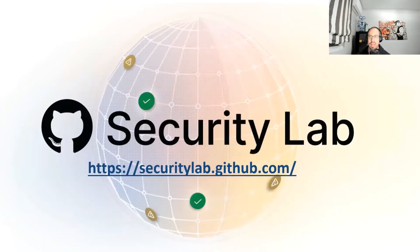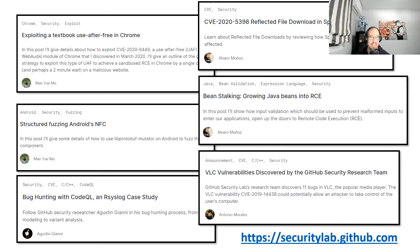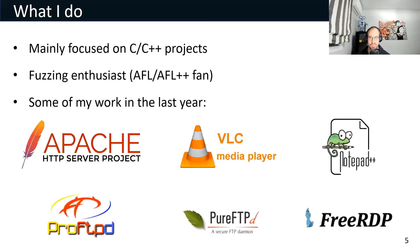Inside GitHub, I am part of a small team called GitHub Security Lab. Our main goal is to improve the security of open source software. I encourage you to visit our website if you want to know more about our team and the research we do. In my case, I am mainly focused on C and C++ projects, I am a fuzzing enthusiast and a fan of AFL. Today I am going to focus only on the Apache HTTP Server.